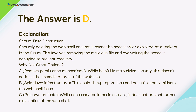Why not other options? A. Remove persistence mechanisms: while helpful in maintaining security, this doesn't address the immediate threat of the web shell. B. Spin down infrastructure: this could disrupt operations and doesn't directly mitigate the web shell issue. C. Preserve artifacts: while necessary for forensic analysis, it does not prevent further exploitation of the web shell.